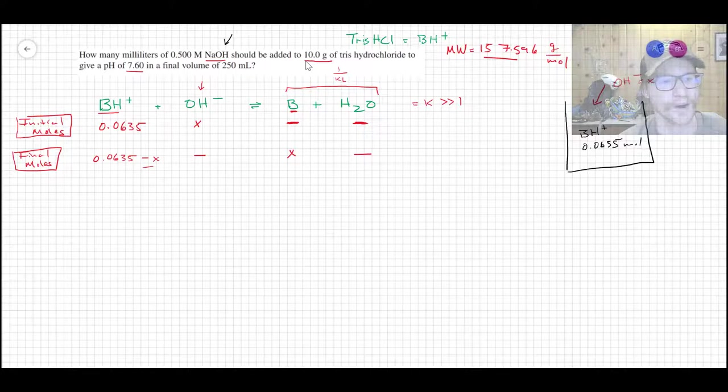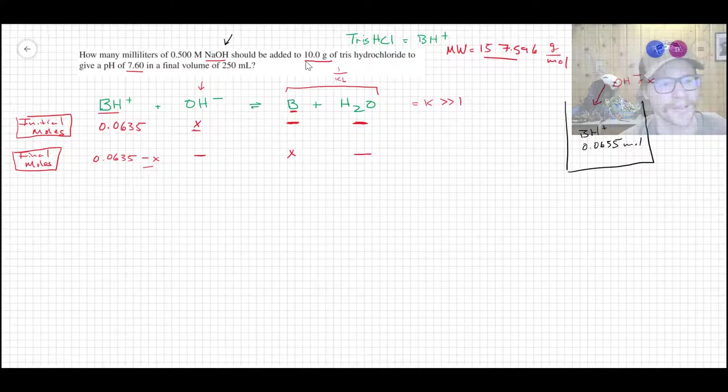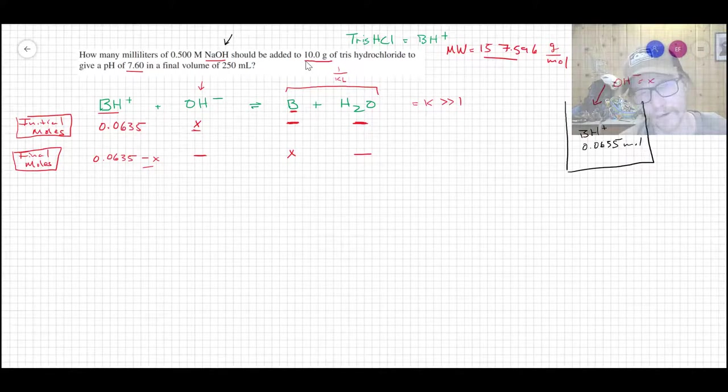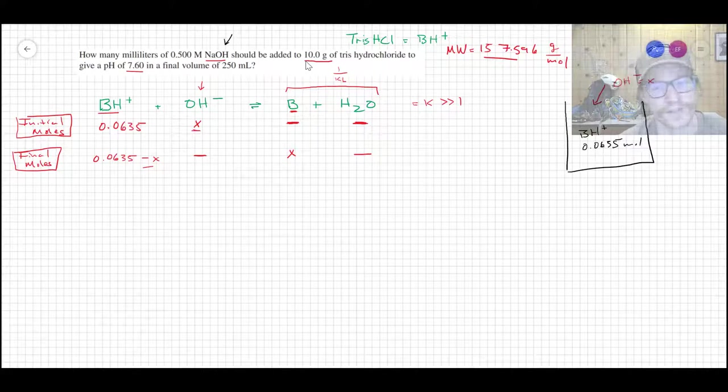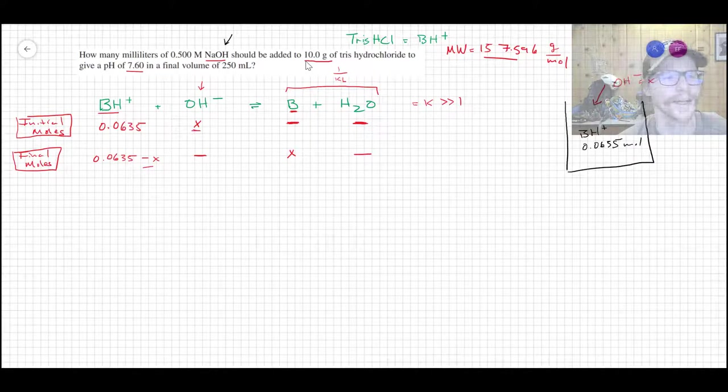Kb being a small number if it's a weak acid. So 1 divided by a very small number gives me a K that's much, much greater than 1. So anytime you're adding like a strong base or strong acid, you can assume it's going to completion simply because that reaction has a very large K. And so because of that, we assume that all of the hydroxide is going to chew up the same amount of the protonated form, the BH+.